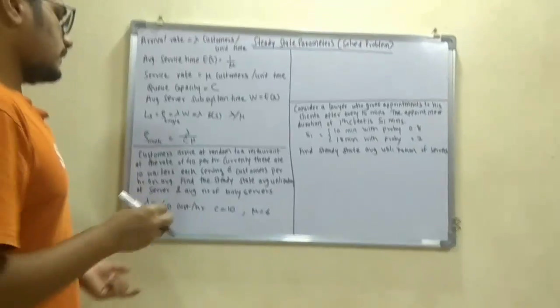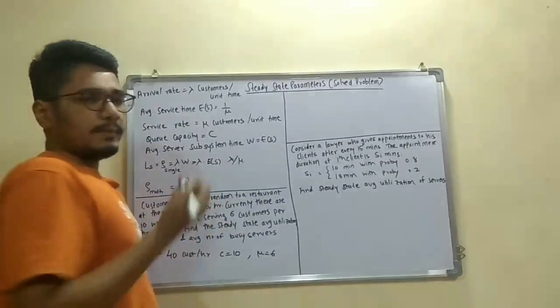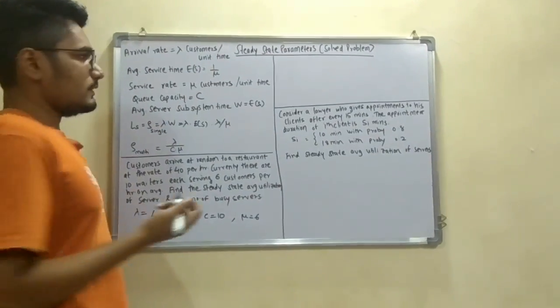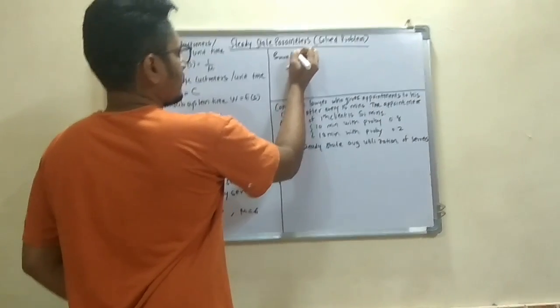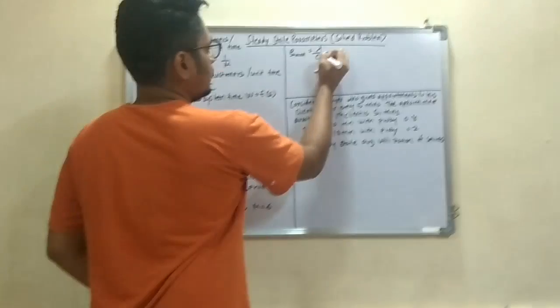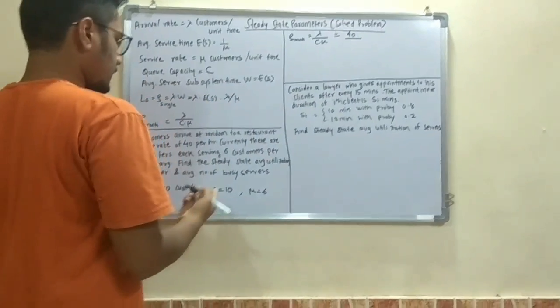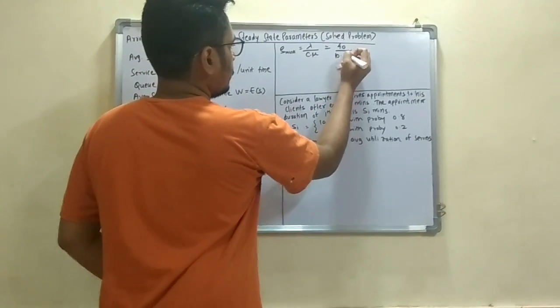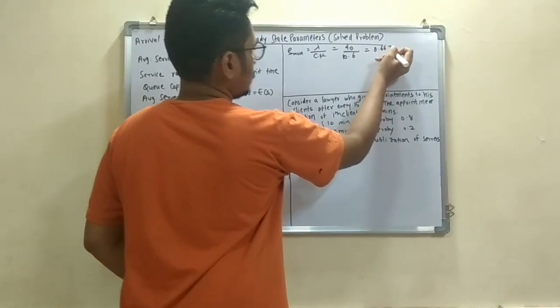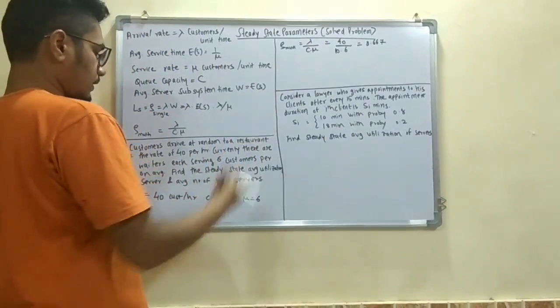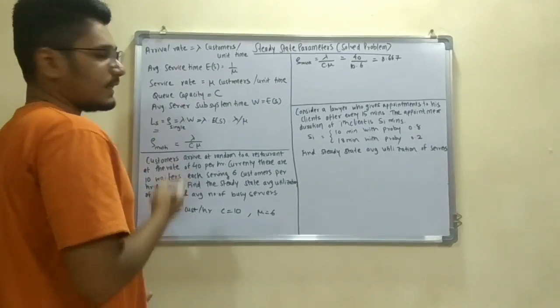Now let us construct the formula. So first of all they are asking for the steady state average utilization. And since it is a multi server, since there are many waiters in the restaurant, you will be solving for multi server and it would be lambda by C into mu. So value of lambda would be 40 divided by C into mu, that is 10 into 6. The value comes out to be 0.6667.